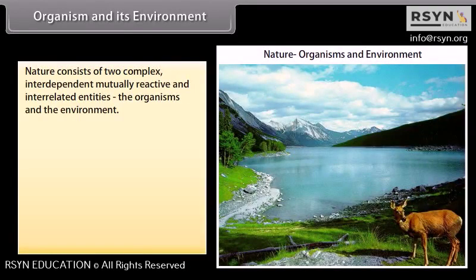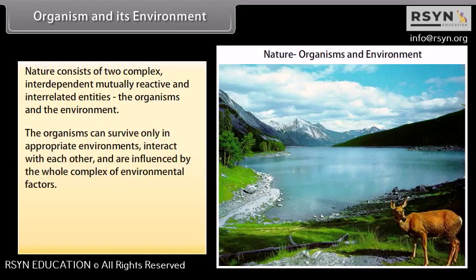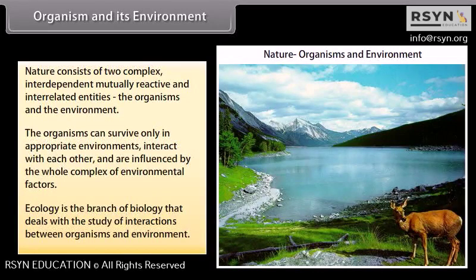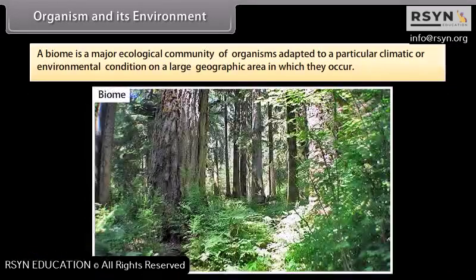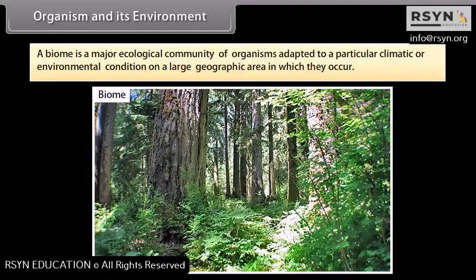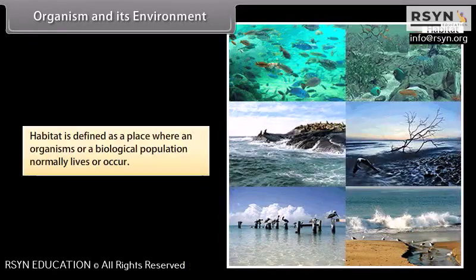Nature consists of two complex, interdependent, mutually reactive and interrelated entities: the organisms and the environment. Organisms can survive only in appropriate environments and are influenced by the whole complex of environmental factors. Ecology is the branch of biology that deals with interactions between organisms and environment. A biome is a major ecological community adapted to a particular climatic condition on a large geographic area. Habitat is defined as a place where an organism or biological population normally lives or occurs.